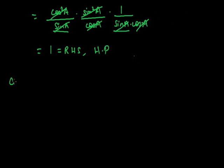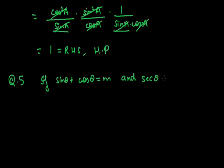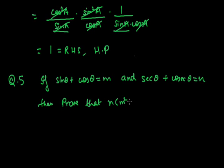Now one more example: If sinθ + cosθ = m and secθ + cosecθ = n, then prove that n(m² - 1) = 2m. We start with LHS = n(m² - 1). We substitute n = secθ + cosecθ and m² - 1 = (sinθ + cosθ)² - 1.